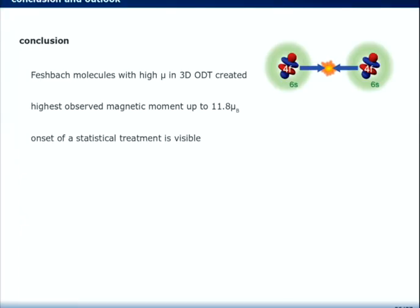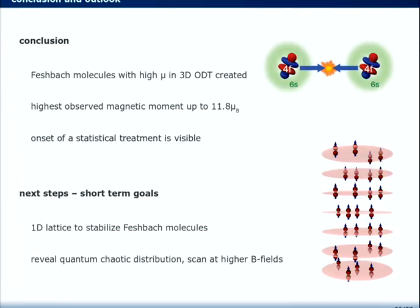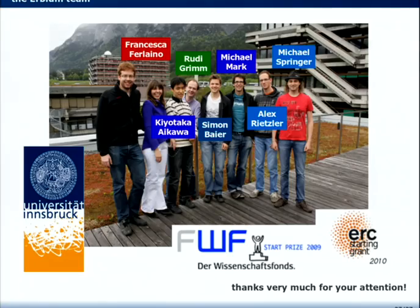So, let me now come to the conclusion and outlook. I showed you that we have been able to create Feshbach molecules with a high magnetic moment in a three-dimensional trap. The highest magnetic moment observed was 11.8 Bohr magnetons, and there might be an onset of the statistical treatment of our Feshbach spectrum visible. And the next steps are to create a 1D lattice and load the molecules into the lattice to stabilize the molecules and have a hopefully longer lifetime than 40 milliseconds, and then reveal quantum chaotic distribution, if this is possible, by doing also a scan at higher B-fields and looking closer to some of the resonances, if they are overlapping or not.